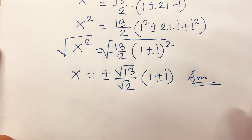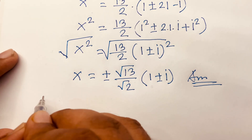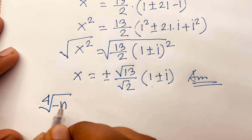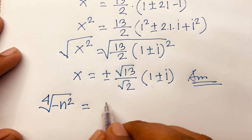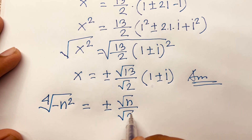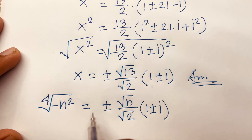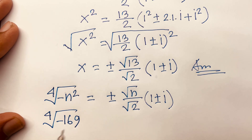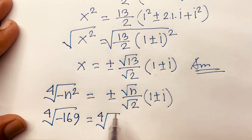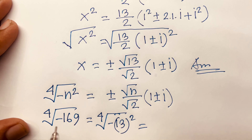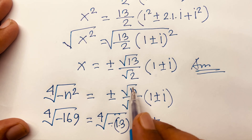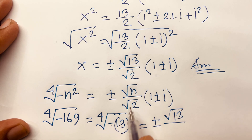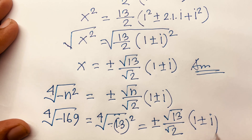Now I solve this question using another method, just as a trick. Our question is the 4th root of minus n squared, which equals plus or minus square root of n over square root of 2, times 1 plus or minus i. Our question is the 4th root of minus 169, which is minus 13 squared. If n is 13, then the answer is plus or minus square root 13 over square root 2, times 1 plus or minus i. This is our final answer.